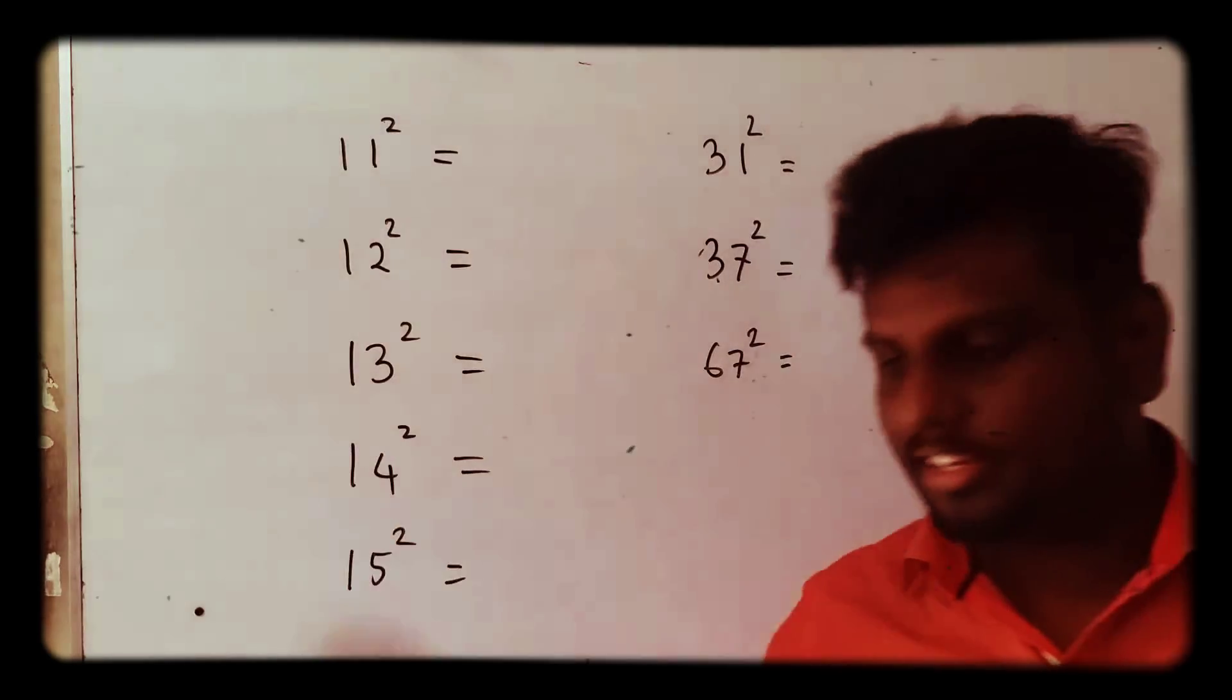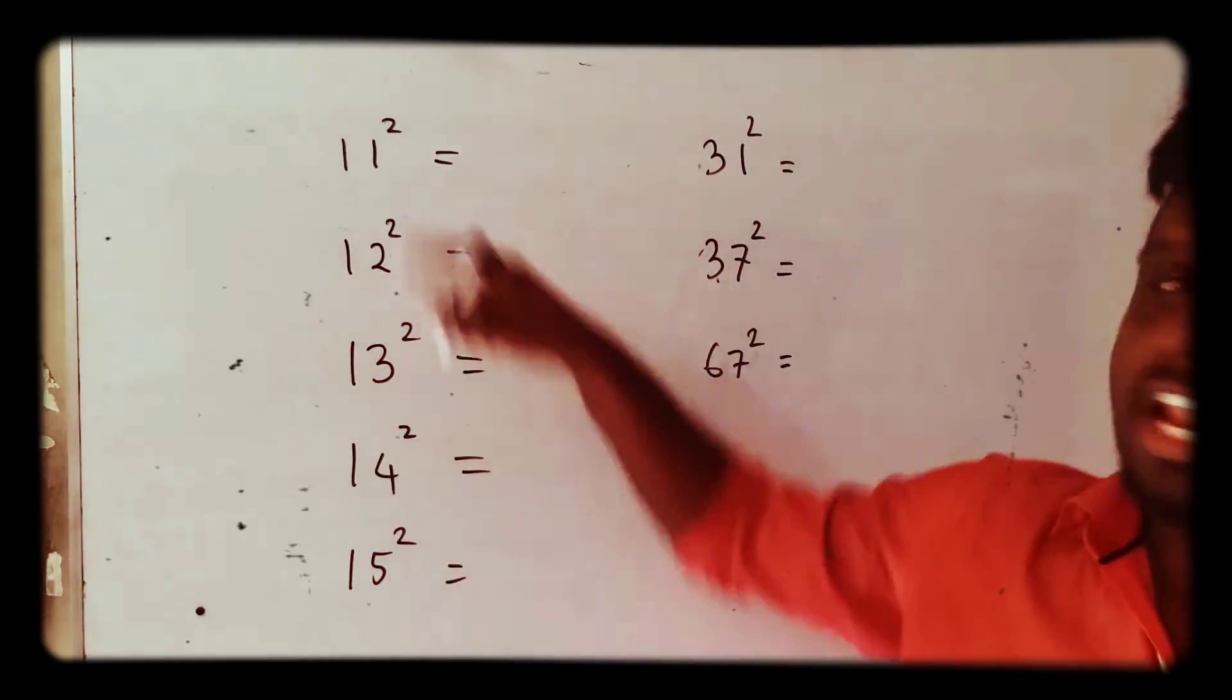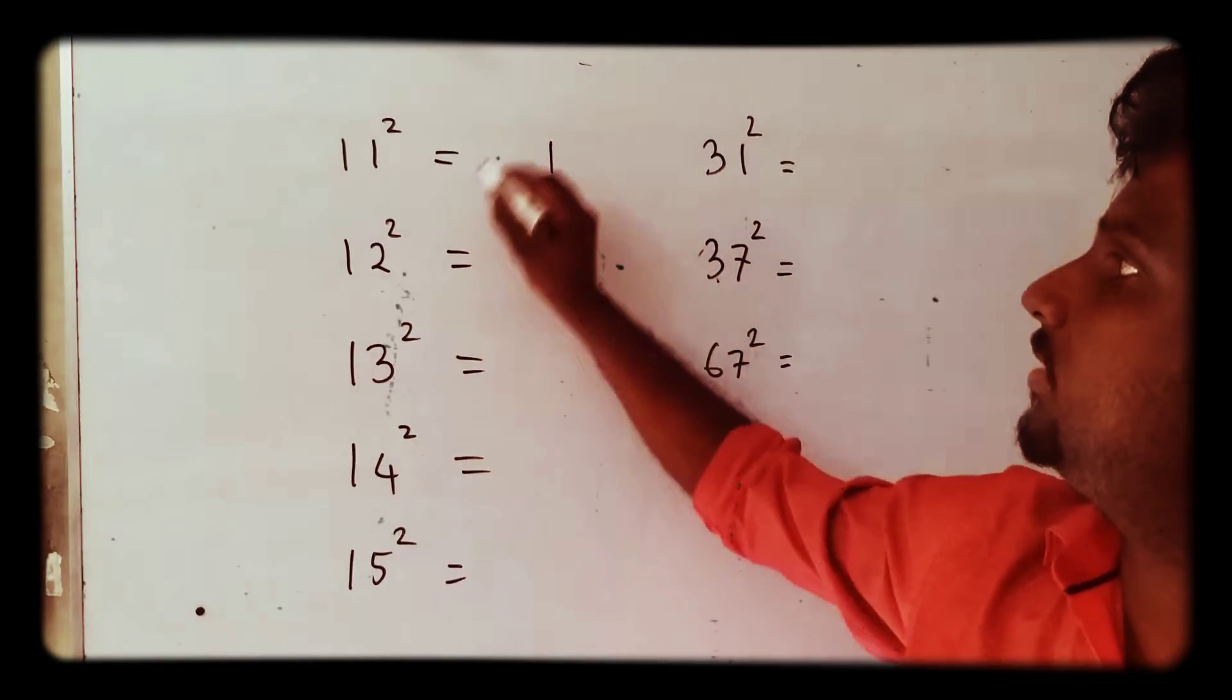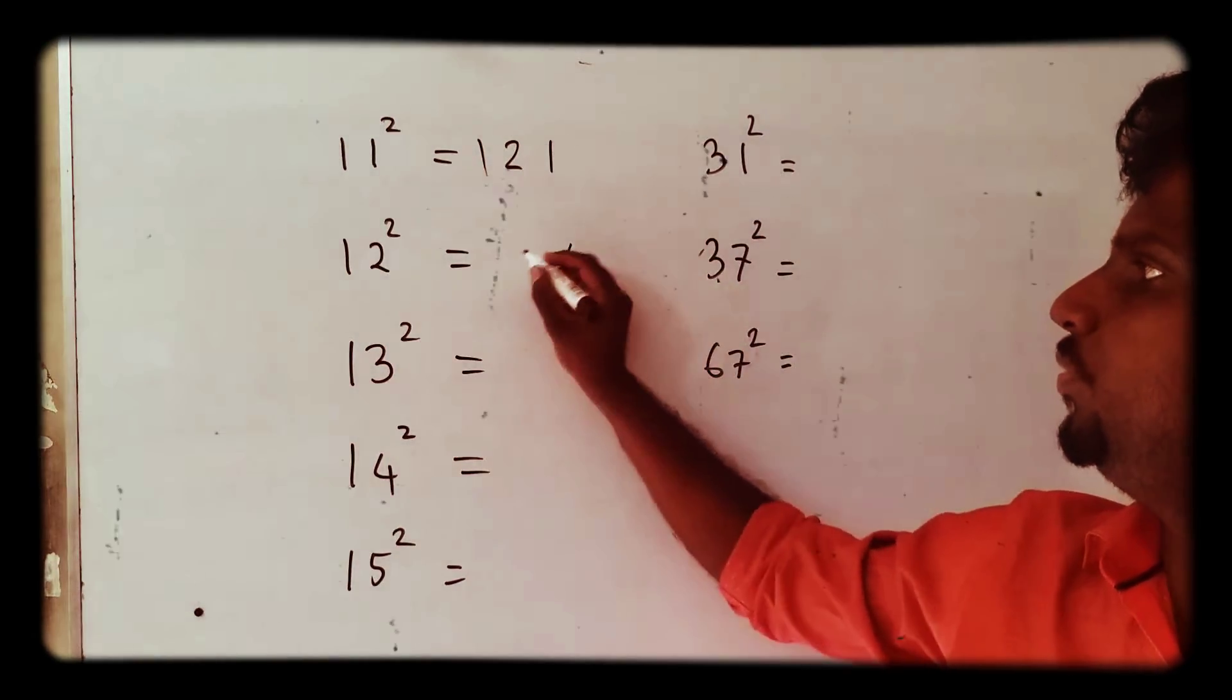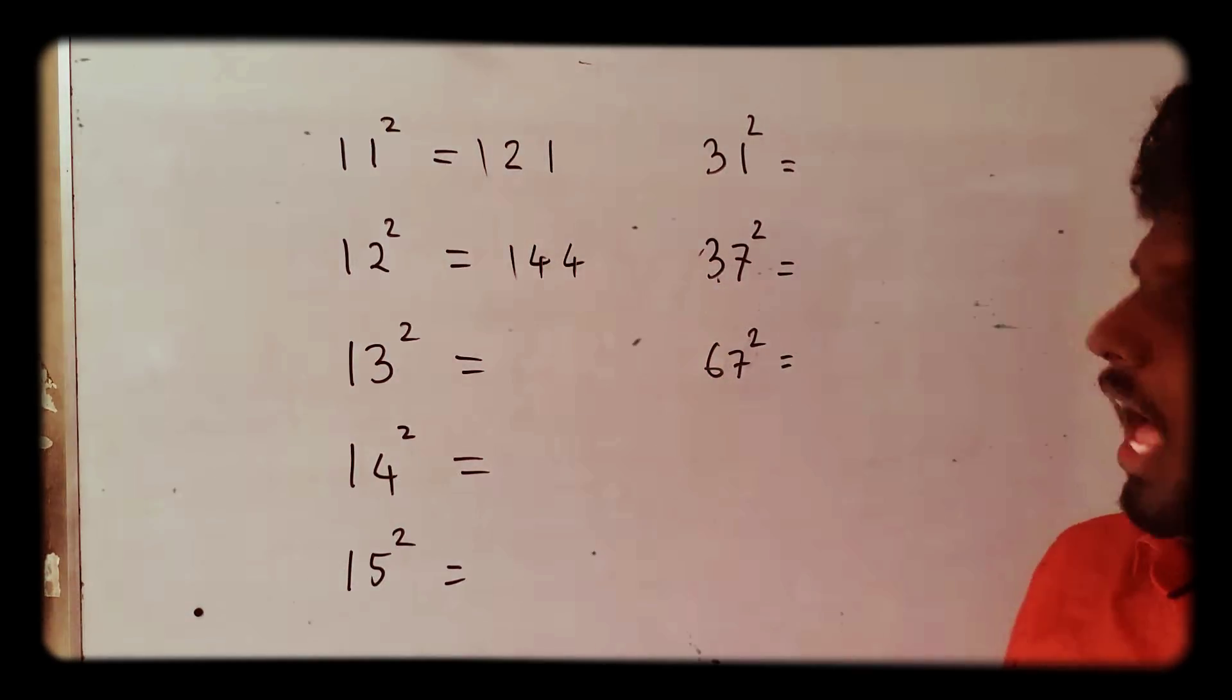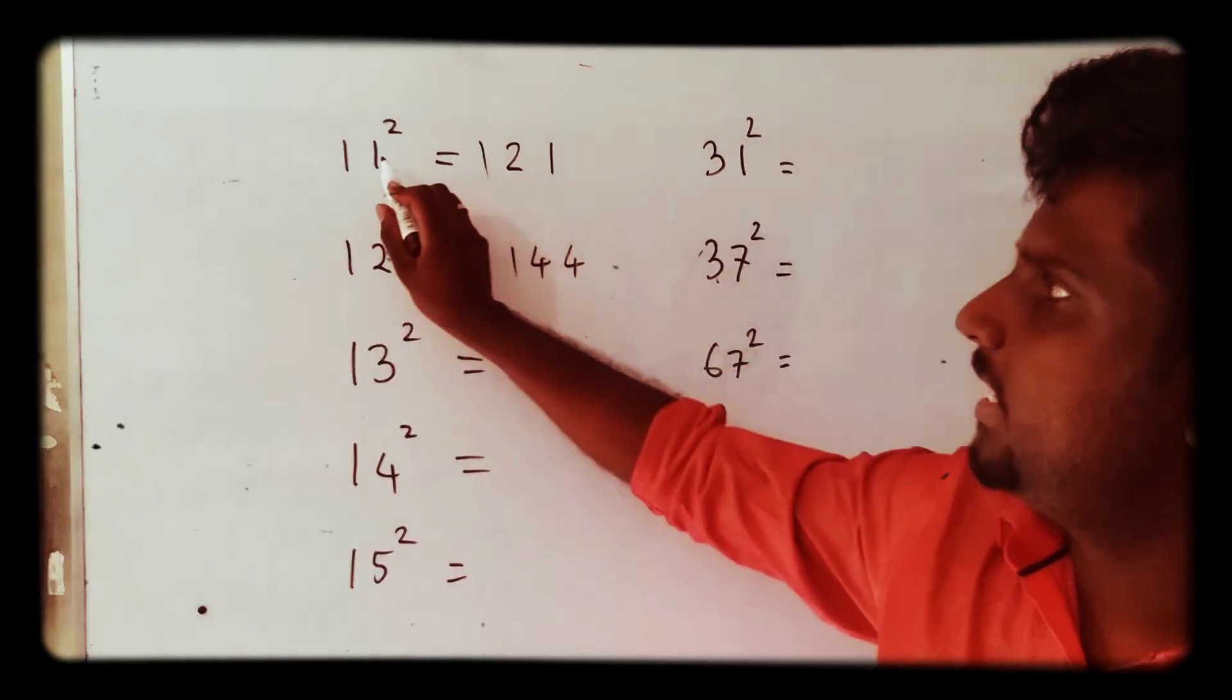How to find the square of numbers easily. You see, 11² = 121 and 12² = 144. How are we going to find it? I'll explain here with this method.